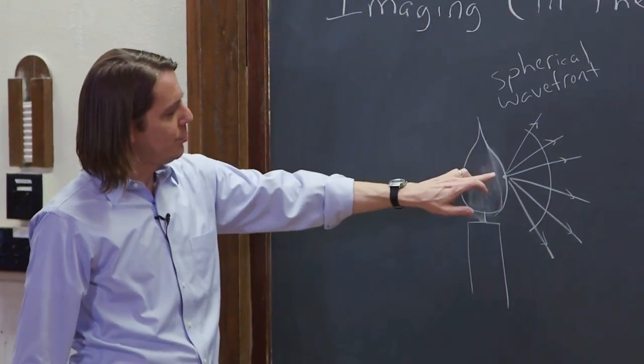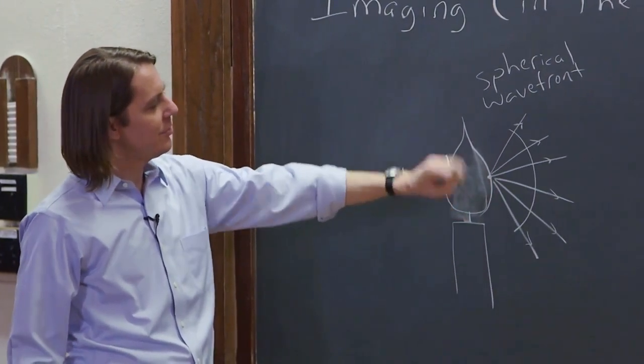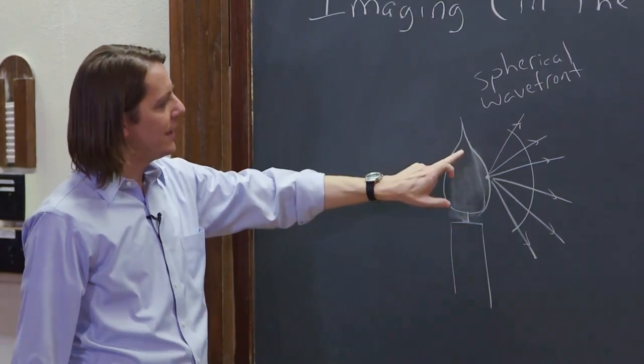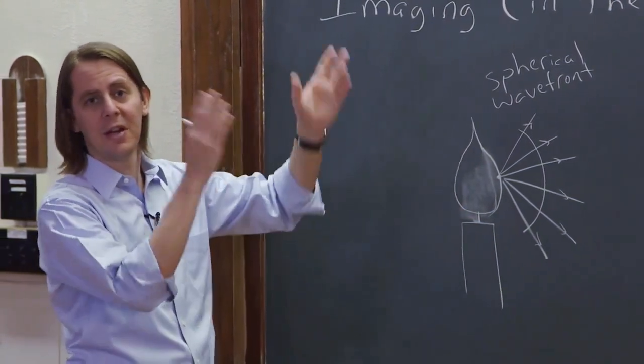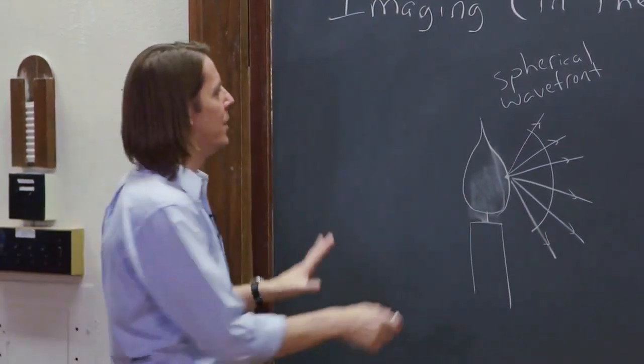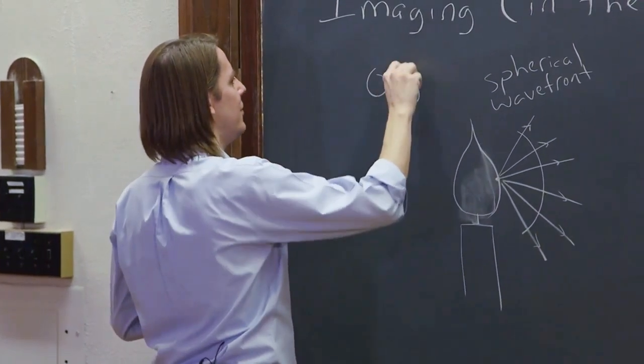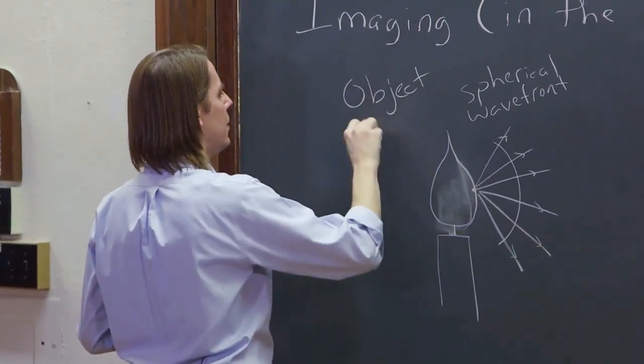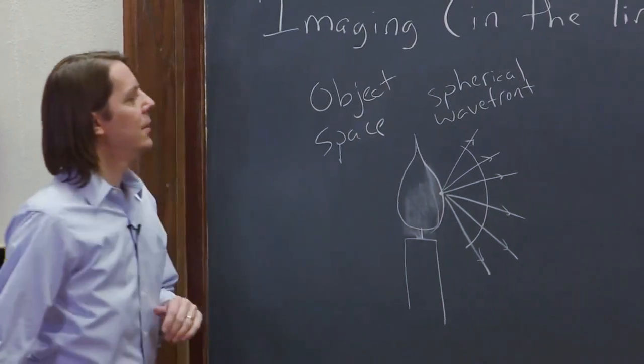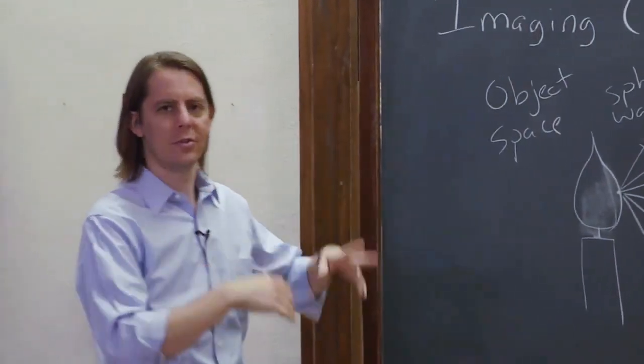Now, this little point on the flame is letting out its own spherical wave front. And actually every point on the flame is sending out a spherical wave front. So this is the object space. This is what is really happening. And in the object space, light is just going out.